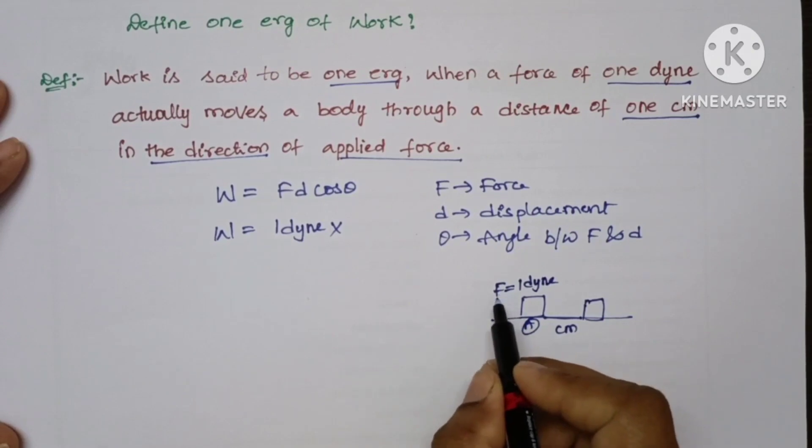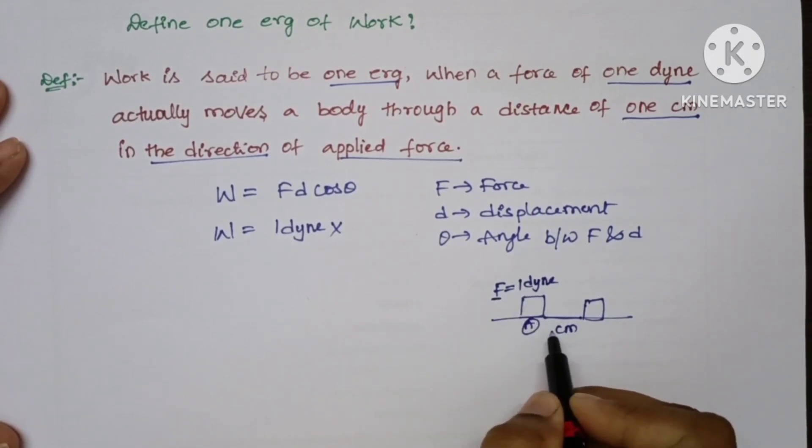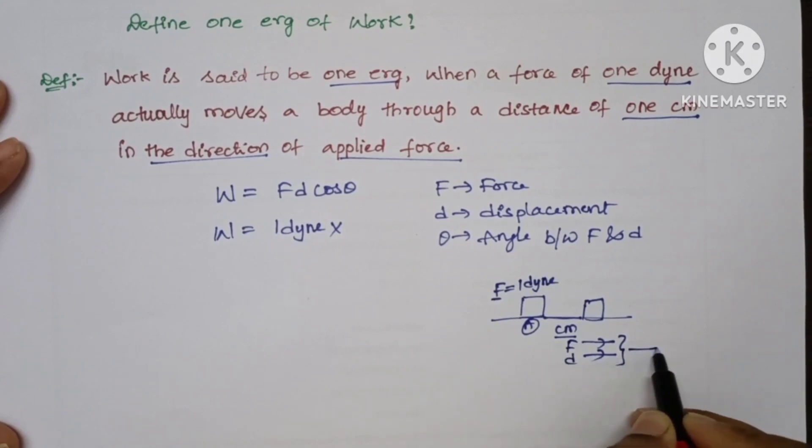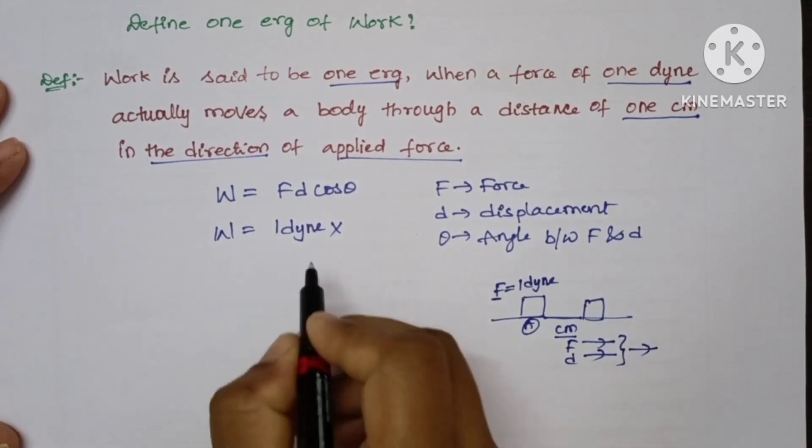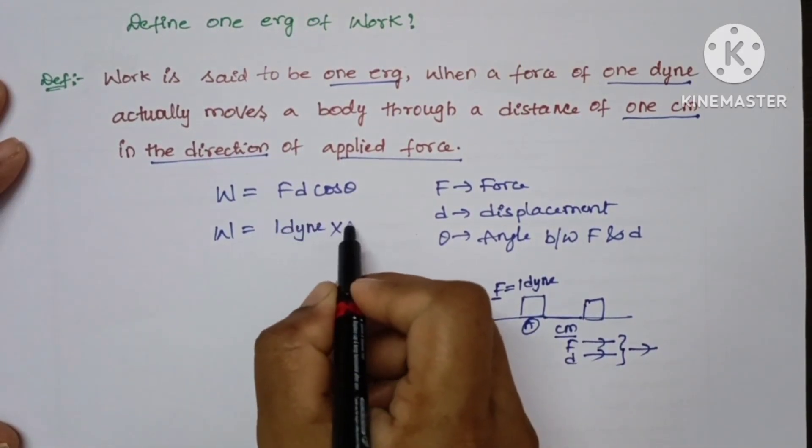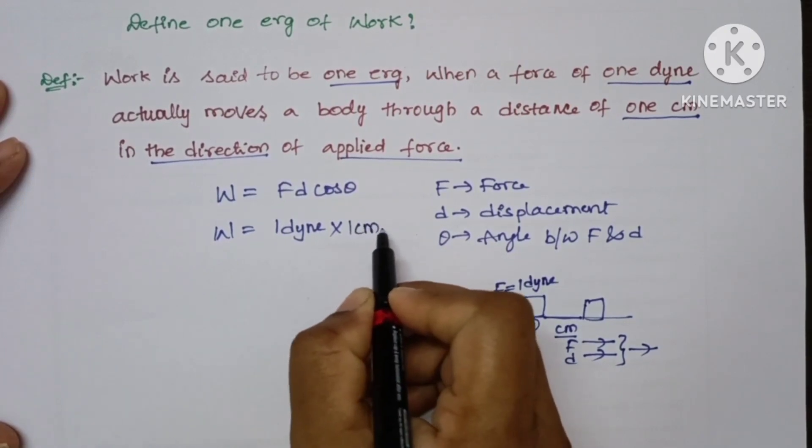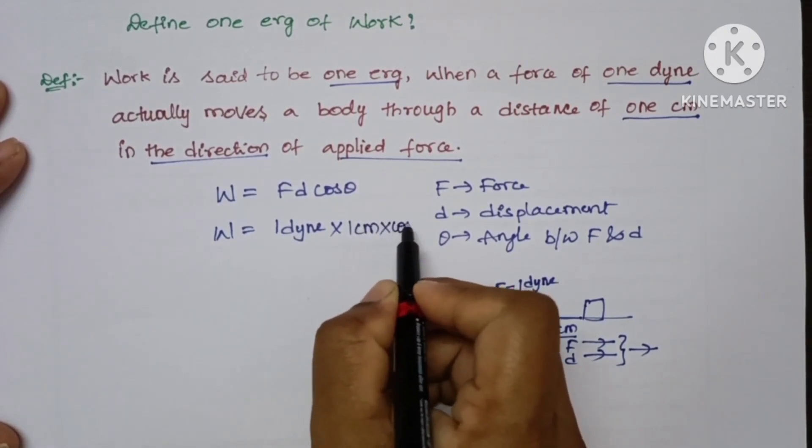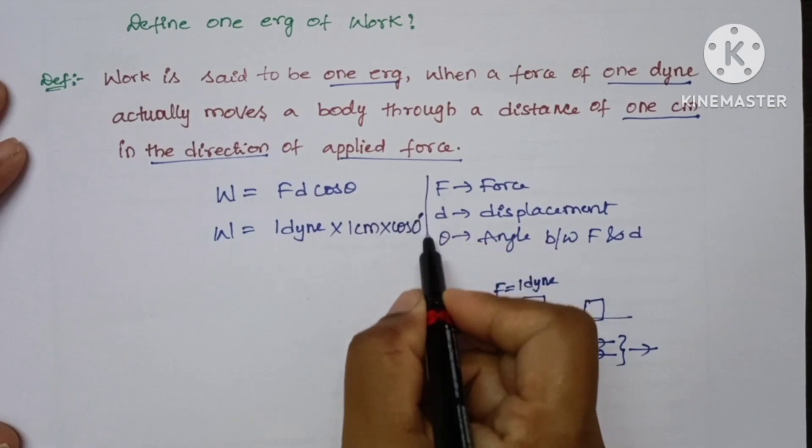If this force moves through one centimeter in the direction of the applied force, that means force and displacement are both in the same direction, meaning the angle between them is zero. So it moves one centimeter distance and the angle between them is zero.